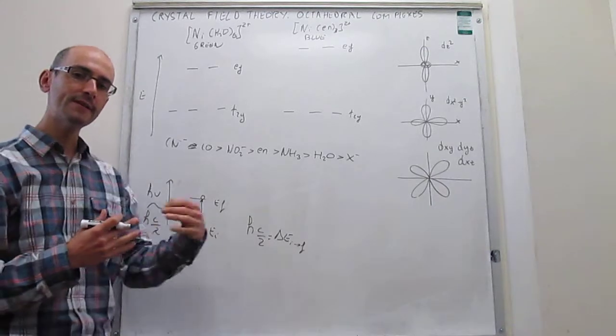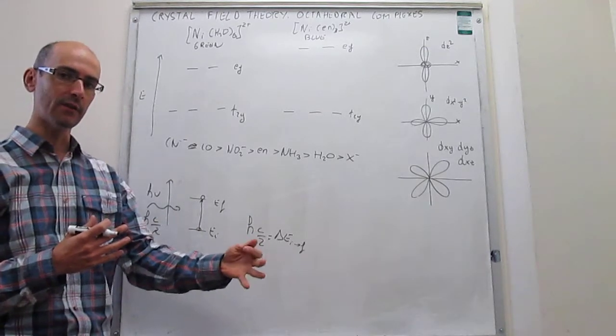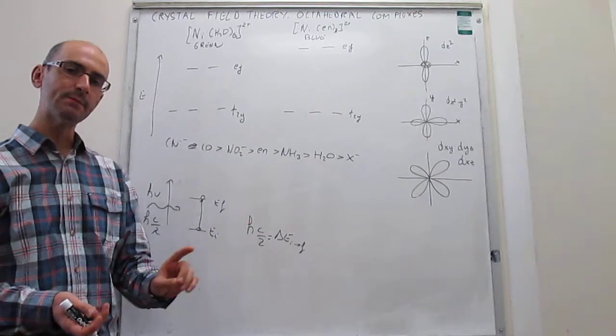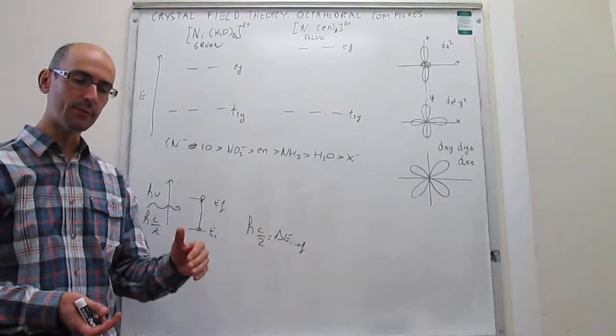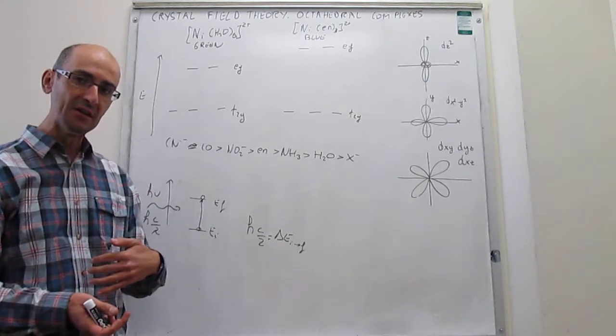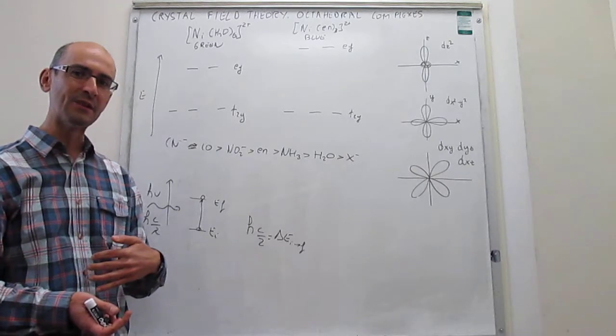If you shine visible electromagnetic radiation of all wavelengths, but it turns out that only one specific wavelength of a photon gets absorbed, the color that you perceive is the complementary of the one that has been absorbed.